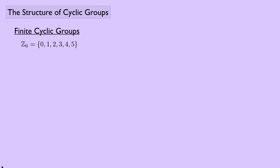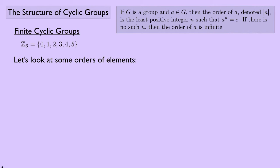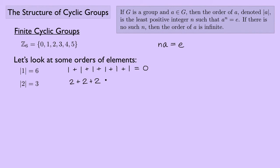Now let's look at finite cyclic groups. A good example is Z₆ = {0, 1, 2, 3, 4, 5} under addition mod 6. In additive notation, the order is the least positive integer n such that n·A = identity. The order of 1 is 6: 1+1+1+1+1+1 = 6 ≡ 0 (mod 6). The order of 2 is 3: 2+2+2 = 6 ≡ 0. The order of 3 is 2, the order of 4 is 3, and the order of 5 is 6.